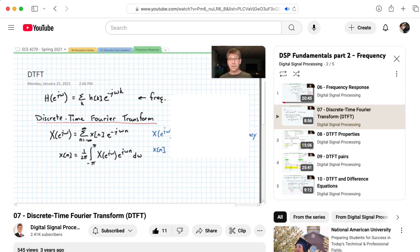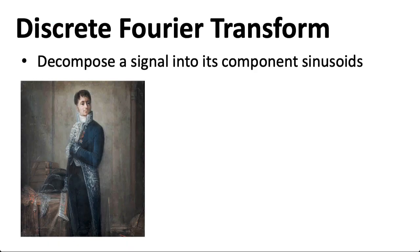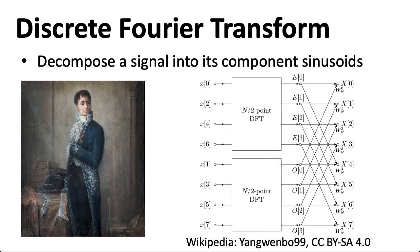The discrete time Fourier transform is something of an analytical tool that you might use when working with pen and paper. The discrete Fourier transform is more of a computational tool. We can compute DFTs using an algorithm called the Fast Fourier Transform. We won't worry about the details of the Fast Fourier Transform in this class — from our point of view, you can just type FFT in MATLAB.